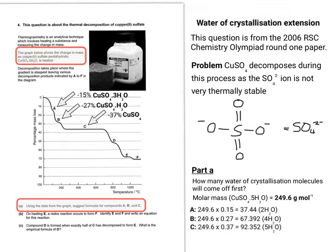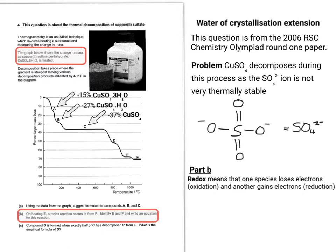So the next part of the question, which is part B, it says, on heating E, a reaction occurs to form F, identify E and F, and write an equation for this reaction. So redox means that one species gains electrons and is reduced. The other species loses electrons and is oxidized. So it's obviously a transfer of electrons from one thing to another.